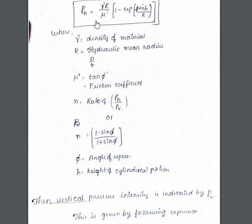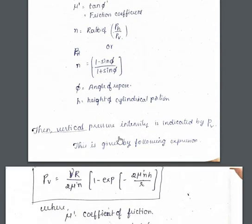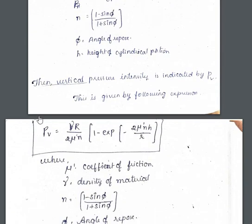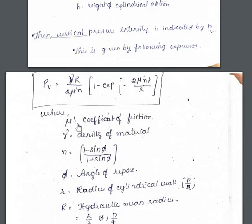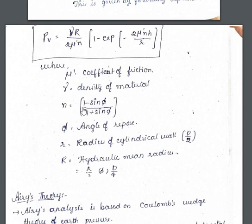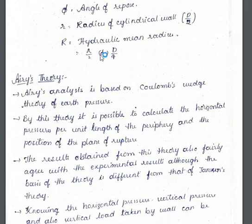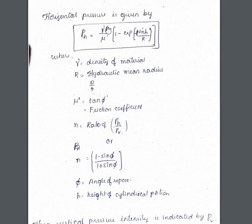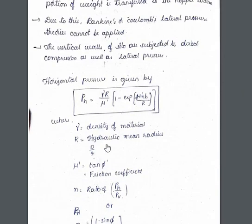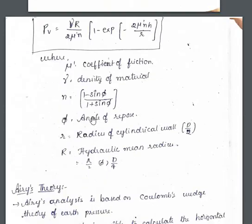The vertical pressure intensity PV in Janssen theory is: PV = (γR / 2μ'n) × (1 − e^(−2μ'nH/R)), where μ' is the coefficient of friction, γ is the density of the material, n = (1 − sin φ) / (1 + sin φ), φ is the angle of repose, and R is the hydraulic mean radius (radius of silo divided by 2, or diameter divided by 4). For this theory, write the formula and explain the parameters, and importantly remember the assumptions.